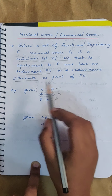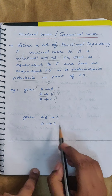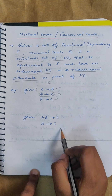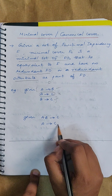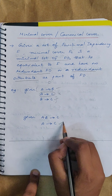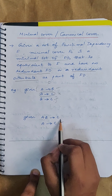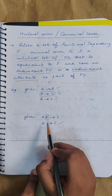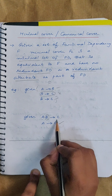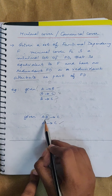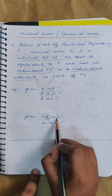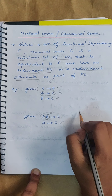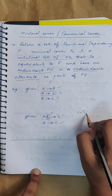Now the next case is finding a redundant attribute. Look at this example: AB giving C and A giving C. This FD says A determines C. If A alone determines C, then in the functional dependency AB→C, B is a redundant attribute — because A does not need attribute B to determine C. So B here is redundant. The redundant attribute is also called an extraneous attribute.